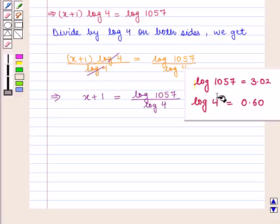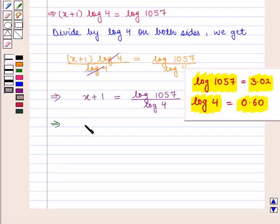Now by using a calculator, we get the value of log(1057) as 3.02 and the value of log(4) as 0.60. This implies that x+1 = 3.02 / 0.60.